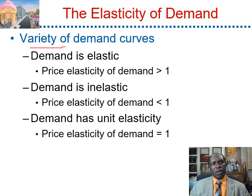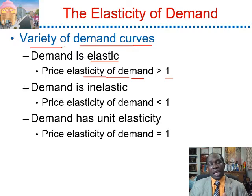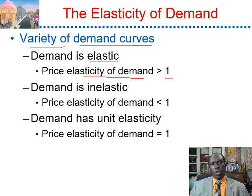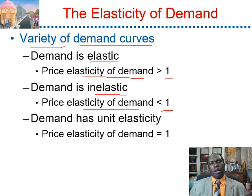With respect to the variety of demand curves, demand is elastic when the price elasticity of demand is greater than 1, meaning the percentage change in the quantity is greater than the percentage change of the price. For instance, if the price decreases by 15% and quantity demanded increases by 25%, then demand for that good would be elastic. Demand is inelastic whenever the price elasticity of demand is less than 1 — in this case, the percentage change of the quantity is less than the percentage change of the price.